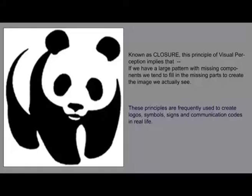Visual perception, as I have told you right at the outset, is not a passive process — it is an active process where you also take part in reconstructing your visual experience. A lot of commercial logos and symbols thrive on this principle. Closure is a very important principle of visual perception, which implies that if we have a large pattern with missing components, we tend to fill in the missing parts to create the image we actually see.